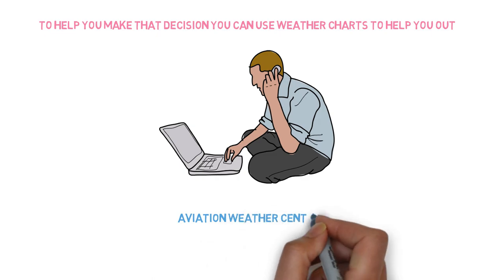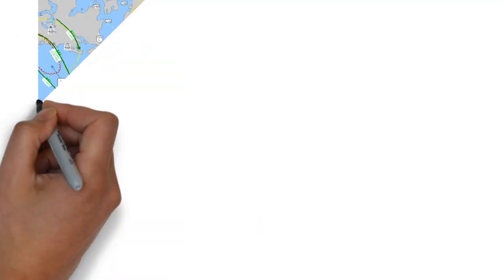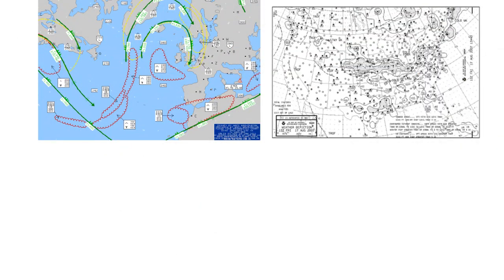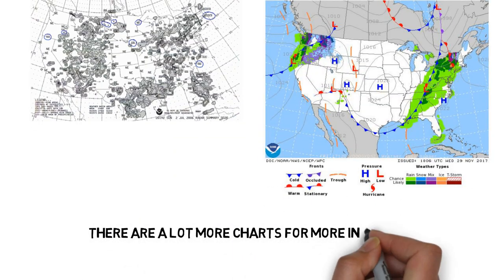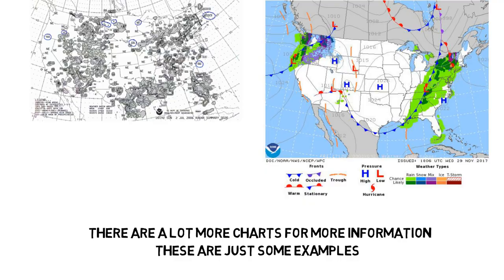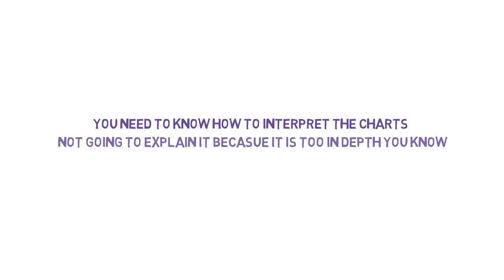To help you make that decision, you can use weather charts. You'll go online to aviationweather.com or 1-800-WX-BRIEF and you can find weather information there, or you can call the weather briefer. These weather charts you need to know how to read them. It'll be on your written exam and the examiner will say what is this symbol, what is that, how's the weather today. Weather is a really important factor. Knowing how to interpret the charts—I'm not going to explain it in depth.